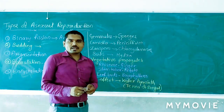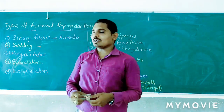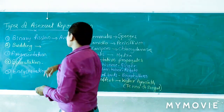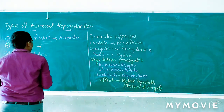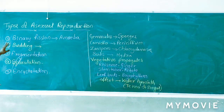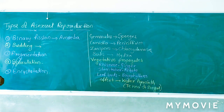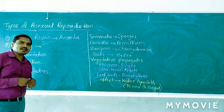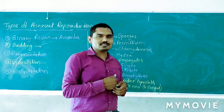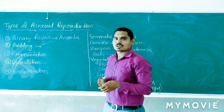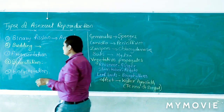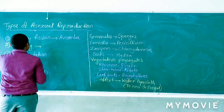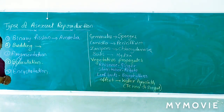Let's begin with the types of asexual reproduction. They are: binary fission, budding, fragmentation, sporulation, and encystation.